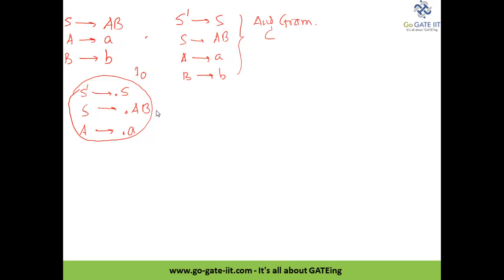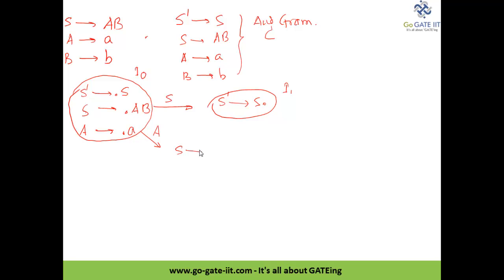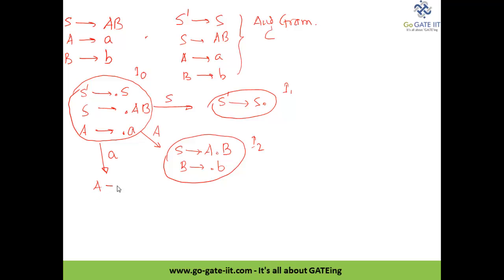From I0 we need to make the shift or reduce actions wherever possible. On S we get S' → S• — this is I1, where the dot has shifted, meaning a shift action occurred. On A we get S → A•B; since the dot is now before B we include B → •b, making I2. On small 'a' we get A → a•, which is I3. This is a final state — we cannot move further as the dot has reached the last symbol of the production.